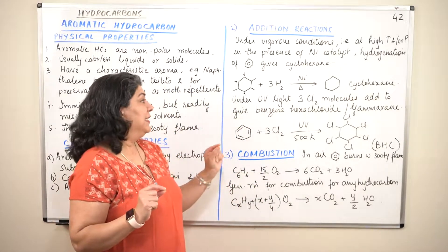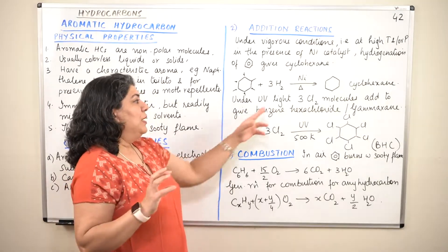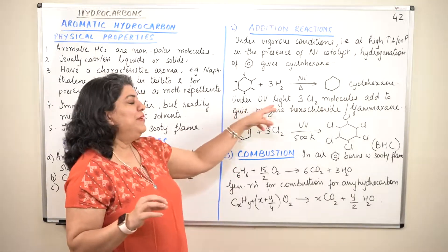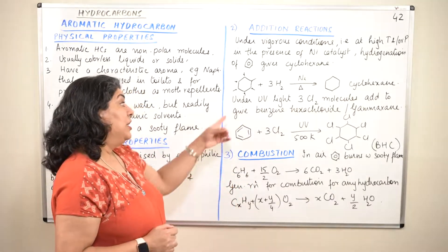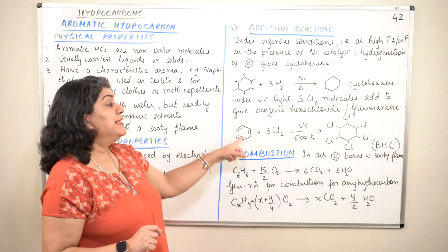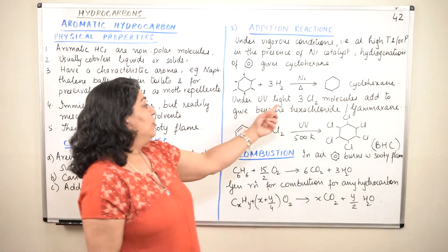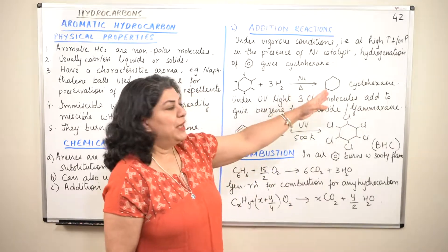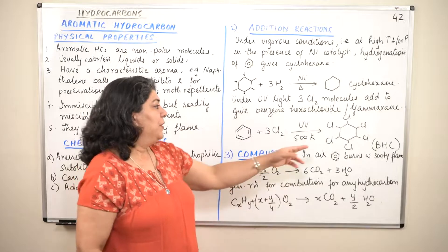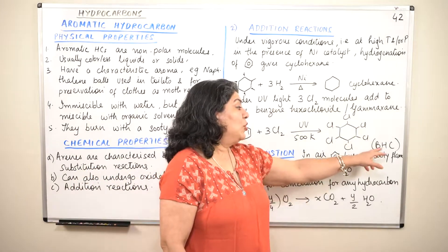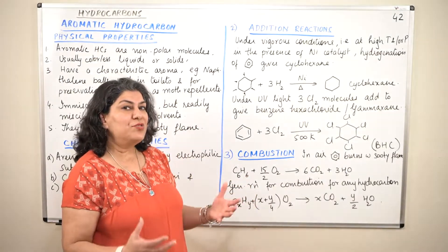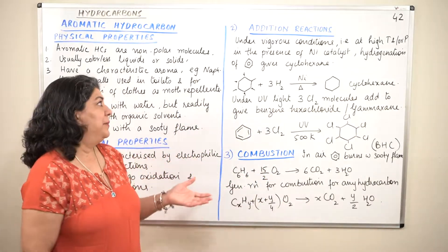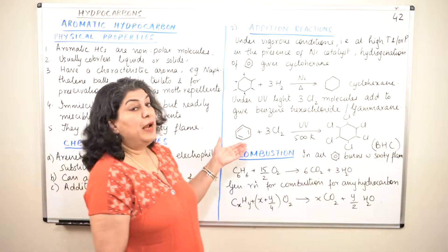Under ultraviolet light, benzene can also add chlorine. Chlorine is sensitive to light, so UV light is used for such reactions. Chlorine molecules add on to benzene to give benzene hexachloride, also written as BHC. The common industrial name of this compound is gammaxane.